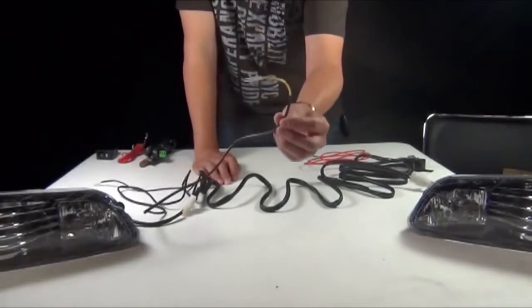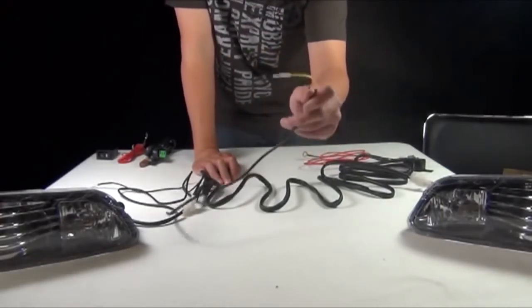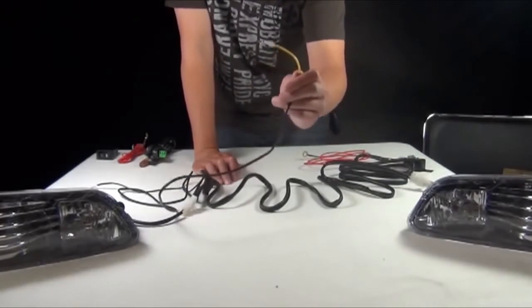Then you have this yellow wire. This wire will be the most difficult to get through. You will have to insert this through the firewall.